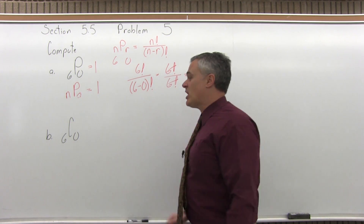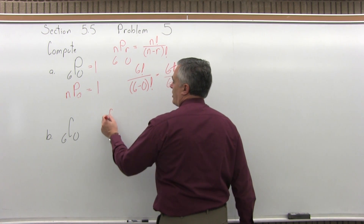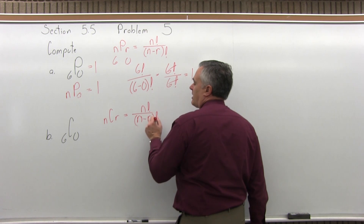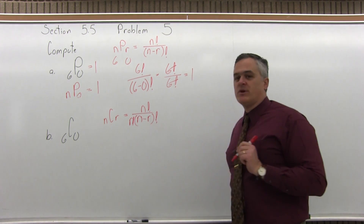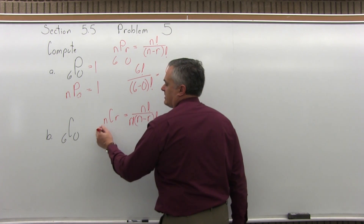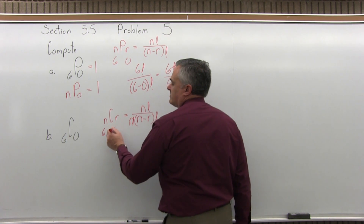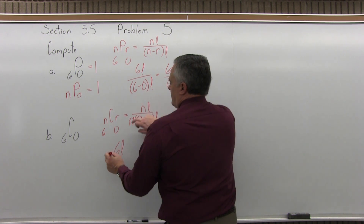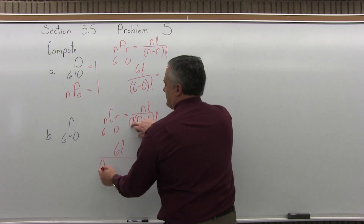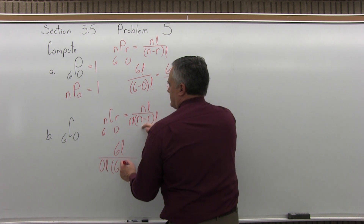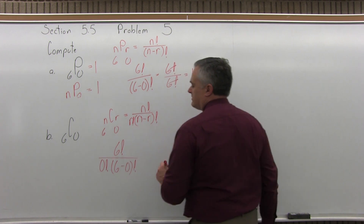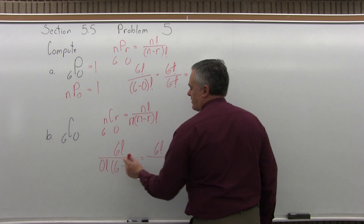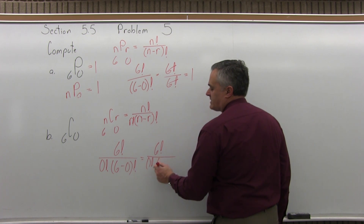The same thing is going to happen with combination. Write the combination formula: n combination r equals n factorial in the numerator over r factorial times (n minus r) factorial in the denominator. Again, the larger value is n, which is 6, and the smaller value is r, which is 0. Filling this in: n factorial in the numerator is 6 factorial, the r factorial in the denominator is 0 factorial, and n minus r gives (6 minus 0) factorial.